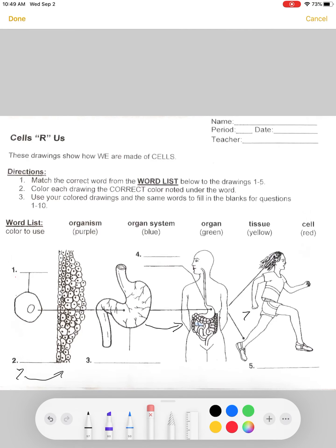All right class, hello. I wanted to show you how we go from the tiniest cell under the microscope and how it progresses to a whole organism. We're going to look at this paper and go through each one in order, one through five. The first thing is a cell.